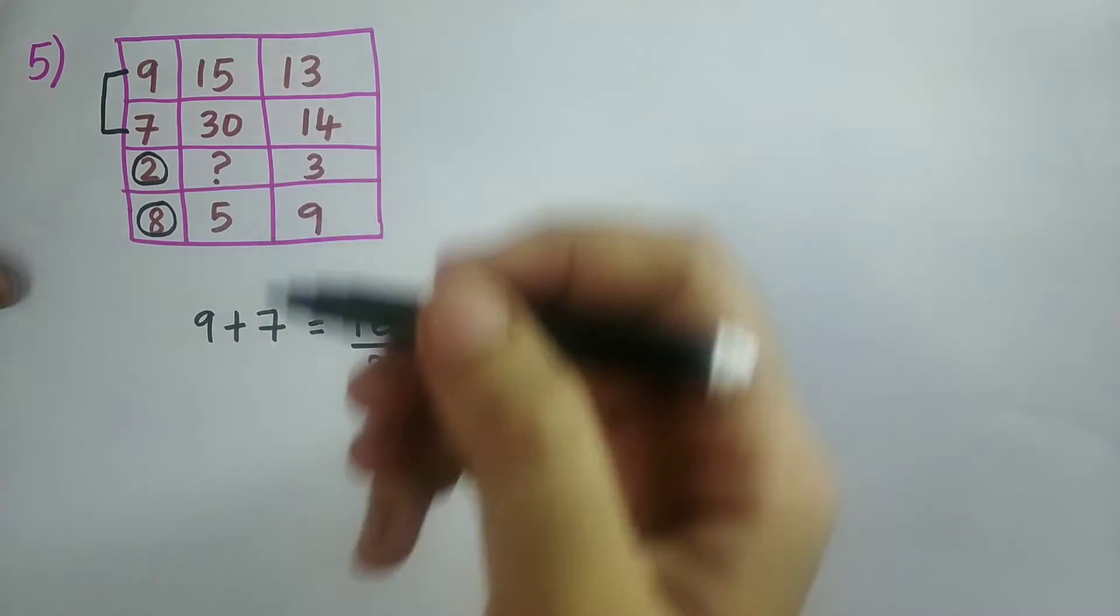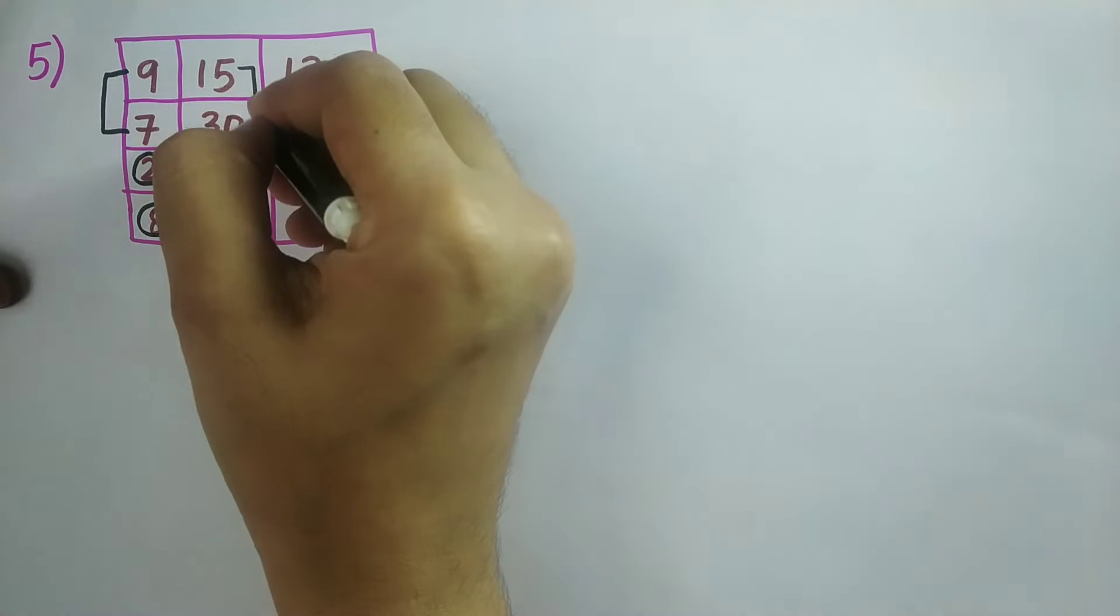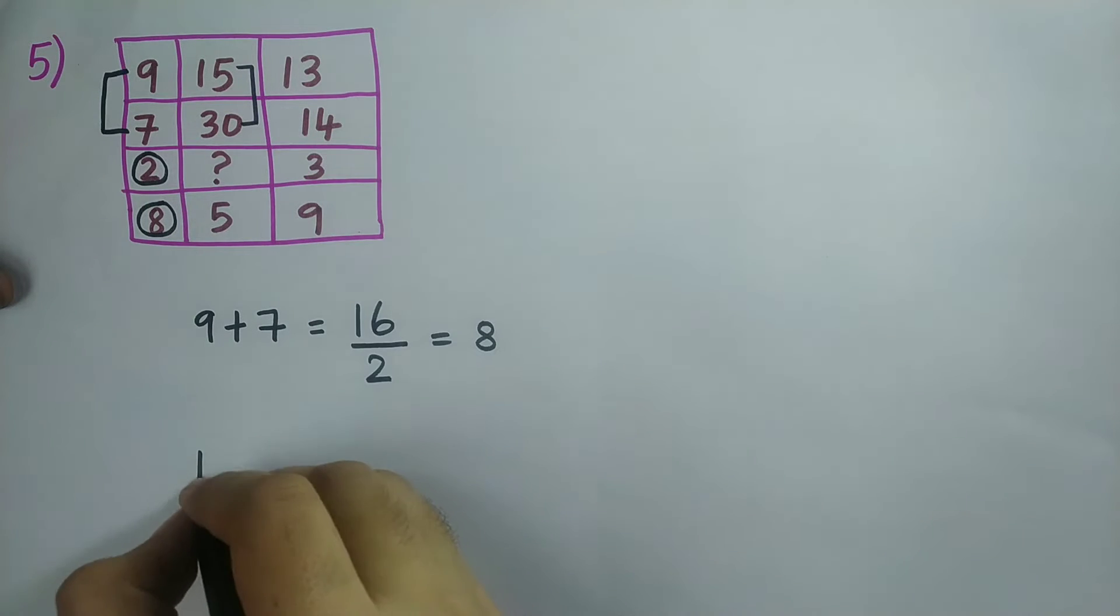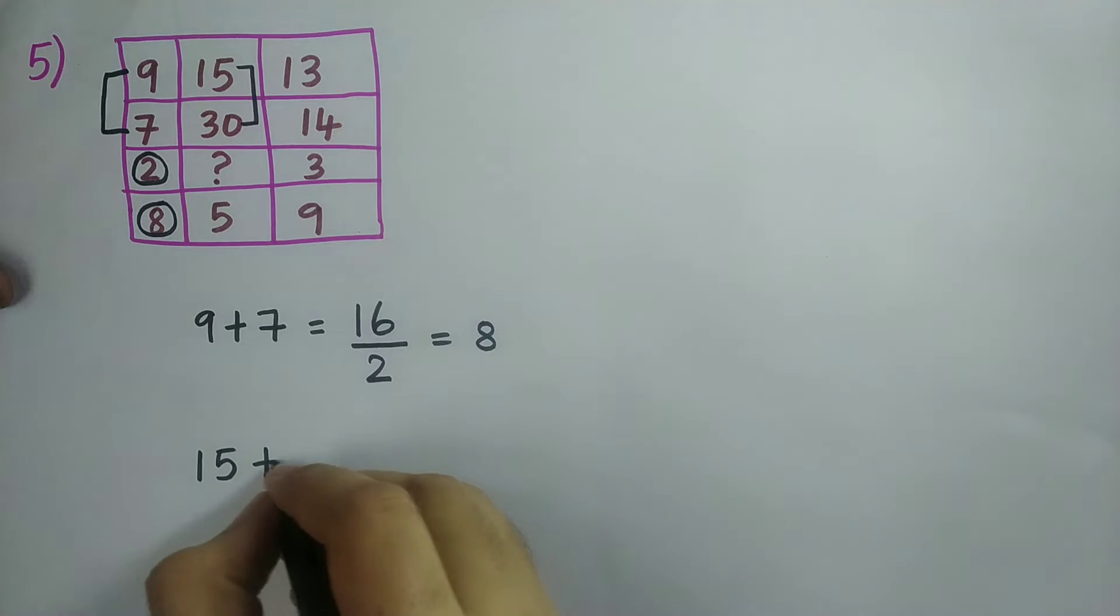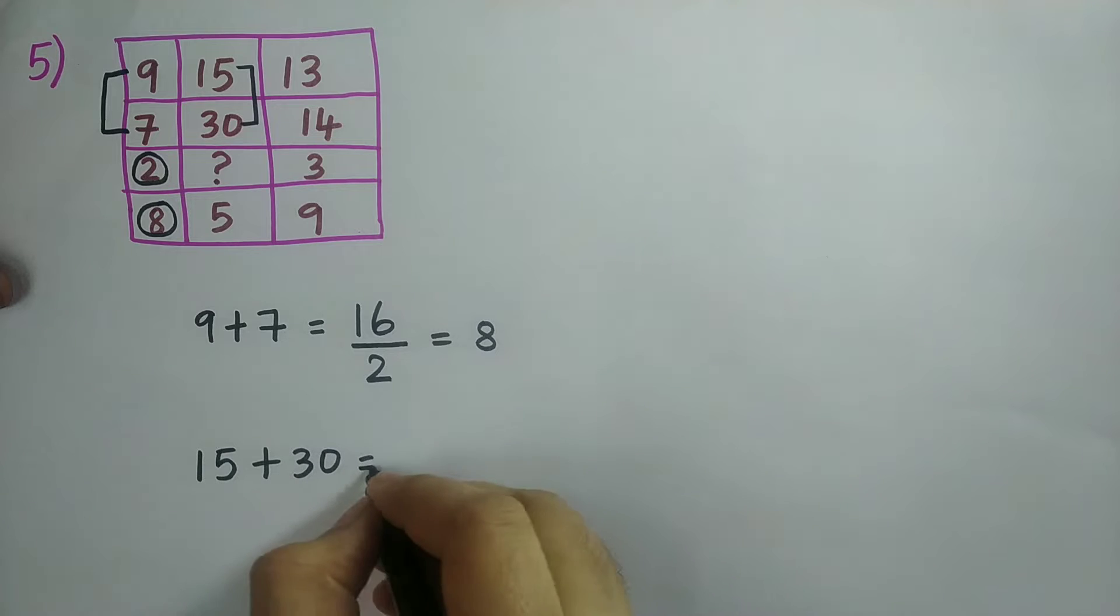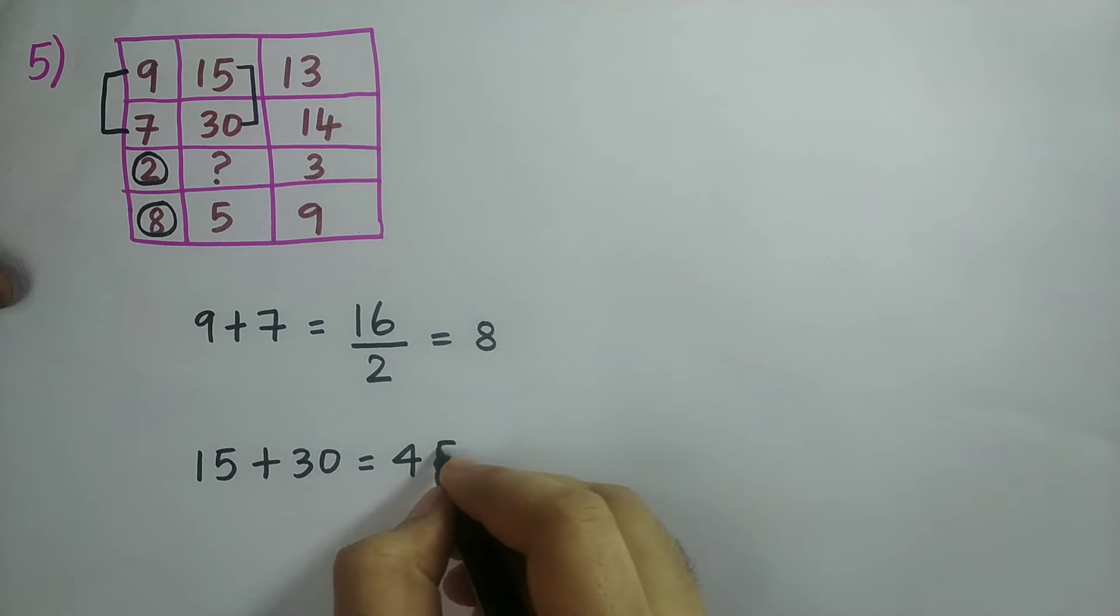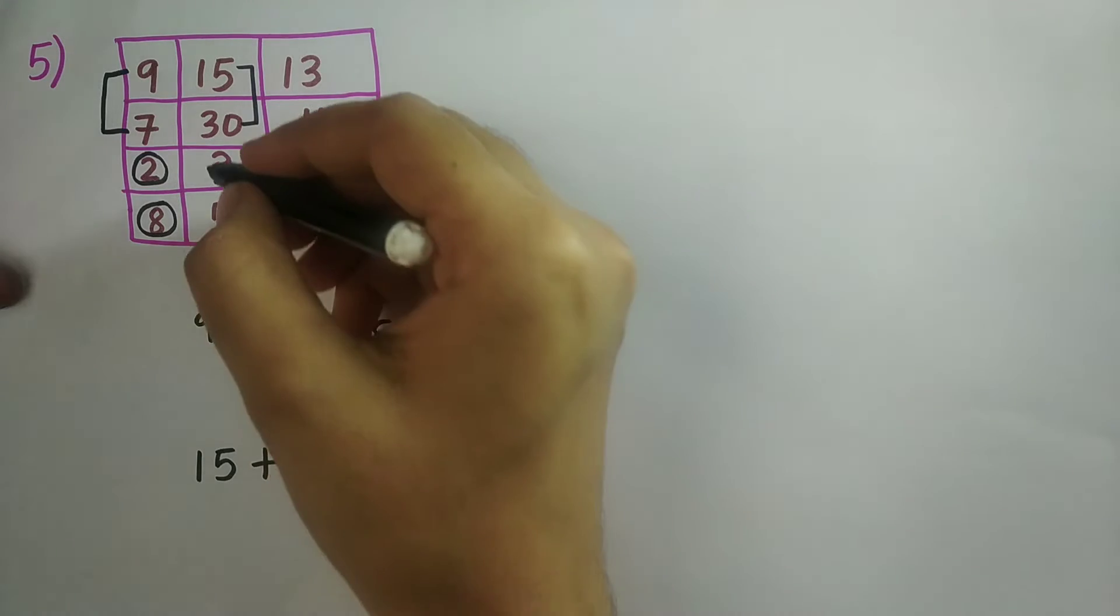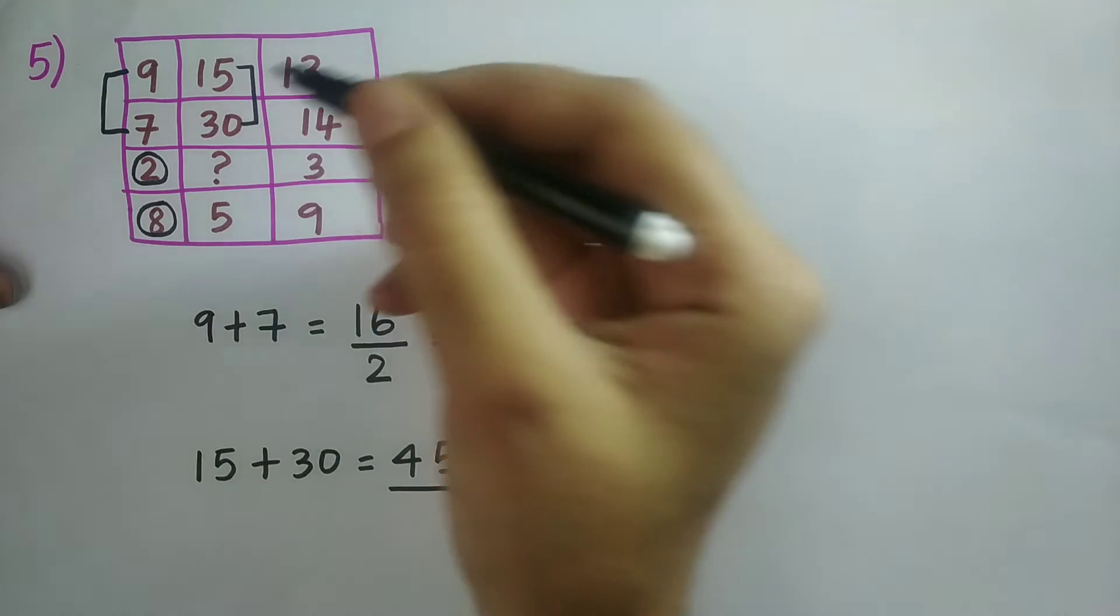Now I should do for this column. I should add the first two numbers. 15 plus 30 is equal to 45. And then I should divide by this number. But over here there is a question mark.